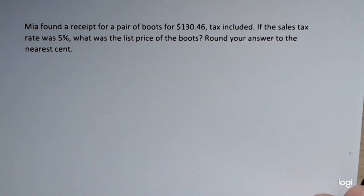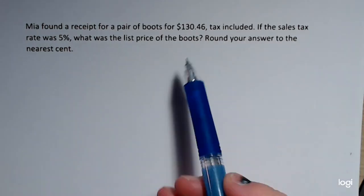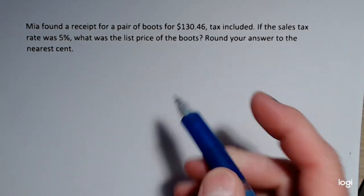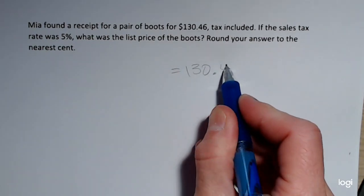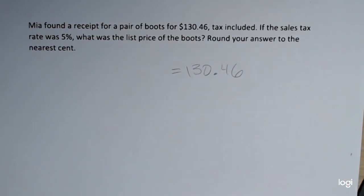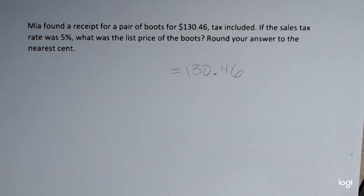I'm going to set this up as a simple algebraic equation. I know that the value on the right side of the equals will be $130.46 because this includes the original price of the boots plus the sales tax.